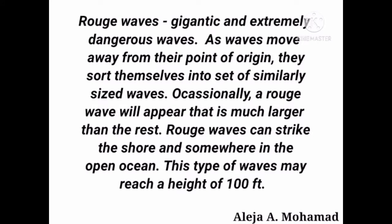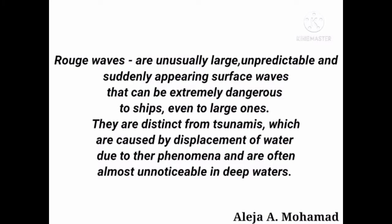Rogue waves are gigantic and extremely dangerous waves. As waves move away from their point of origin, they sort themselves into a set of similarly sized waves. Occasionally, a rogue wave will appear that is much larger than the rest. Rogue waves can strike the shore and somewhere in the open ocean. These types of waves may reach a height of 100 feet. According to Wikipedia, rogue waves are unusually unpredictable, suddenly appearing surface waves that can be extremely dangerous to ships, even large ones. They are distinct from tsunamis, which are caused by displacement of water due to other phenomena, and are often almost unnoticeable in deep waters.